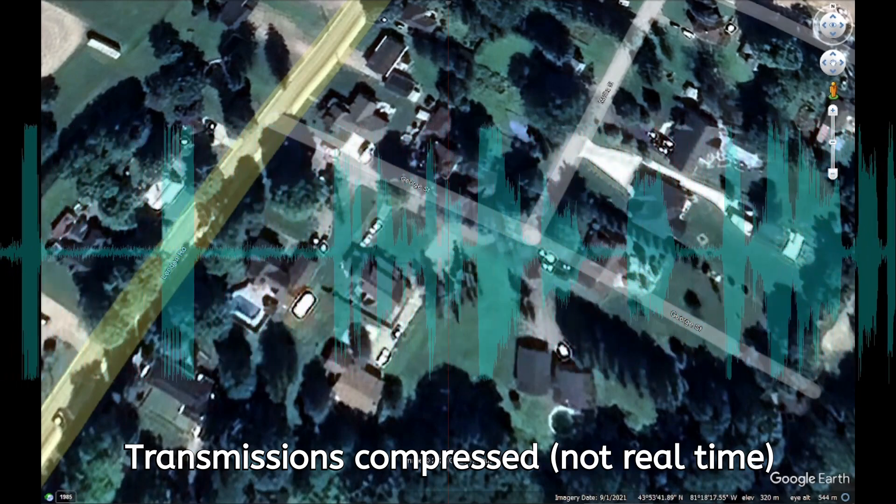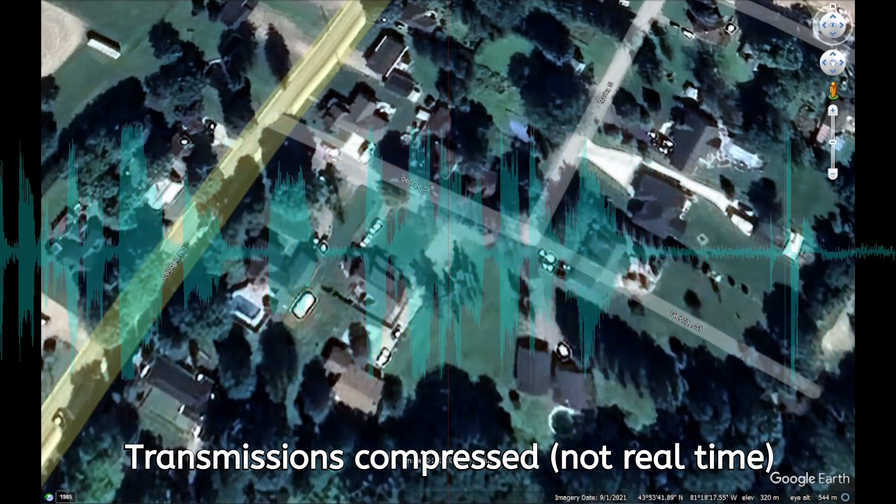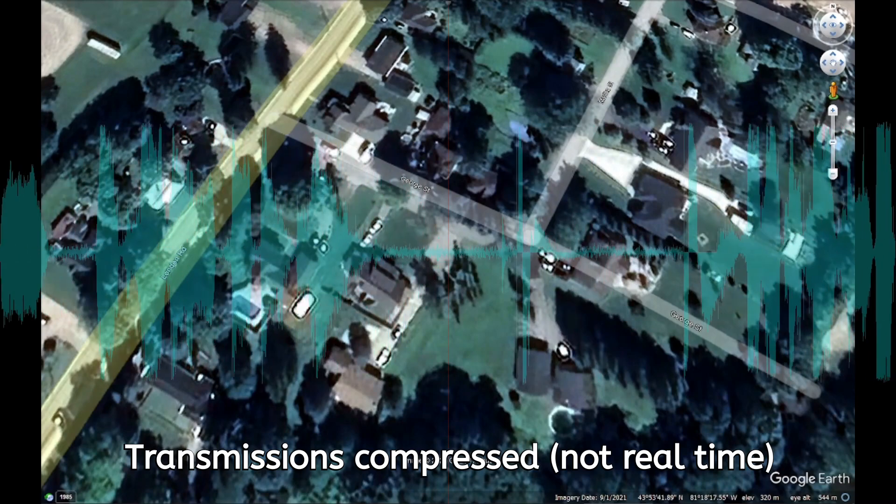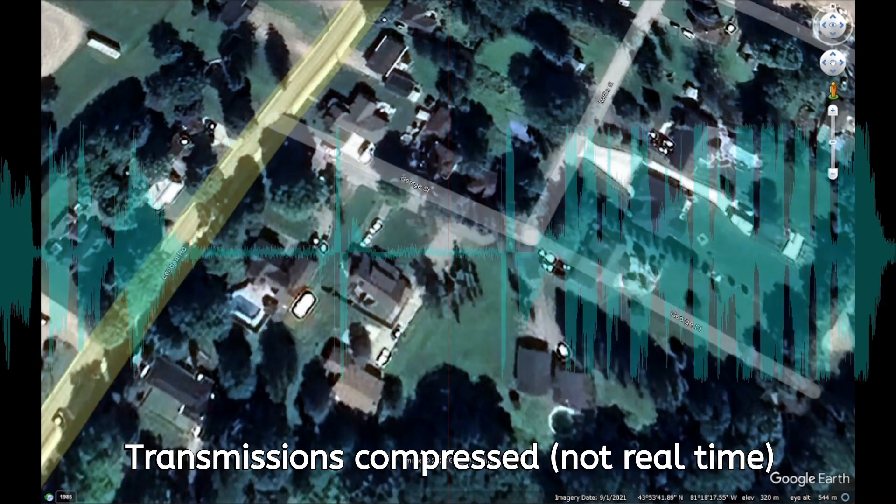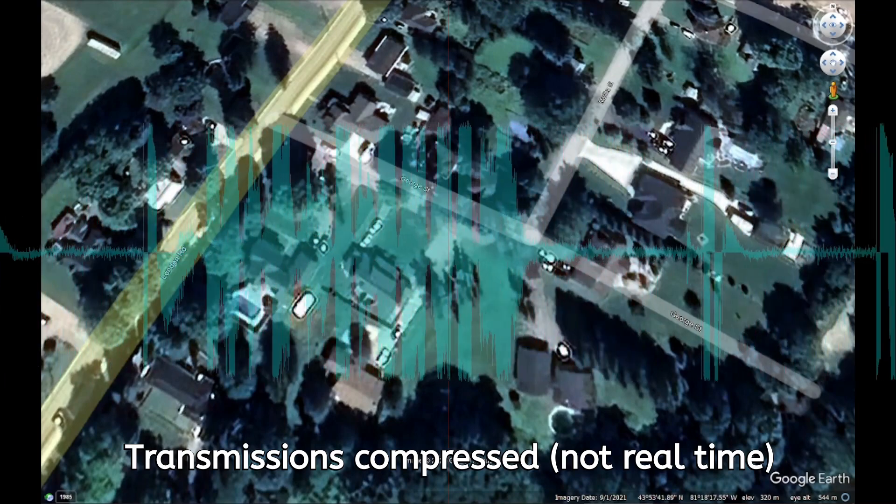Fire dispatch, you can show tank four on scene blocking roadway at Martha and B line. Roger, tank four on scene blocking roadway at Martha and B line.